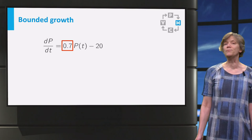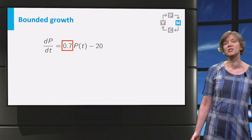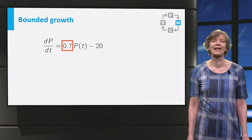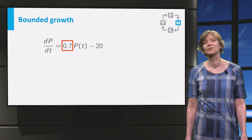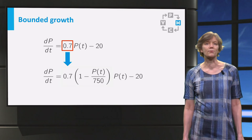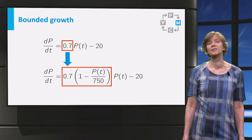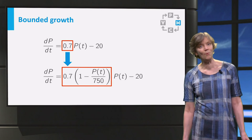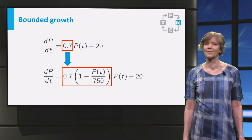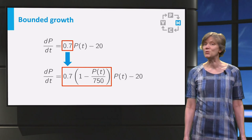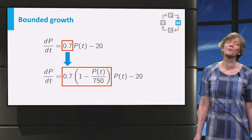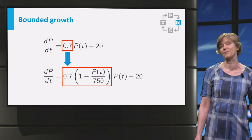Let us assume that our aquarium is large enough for a healthy population of 750 rainbow fish. We can then let the growth rate depend on the population size in the following way. The growth rate is now modeled as 0.7 times (1 minus P over 750). When the population is small, P over 750 is small and the growth rate is still approximately 0.7.